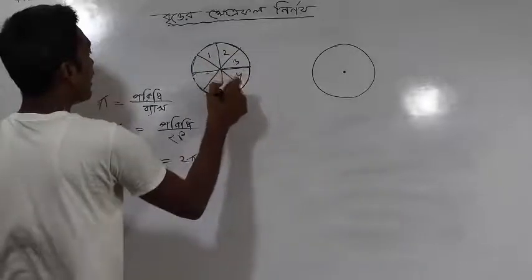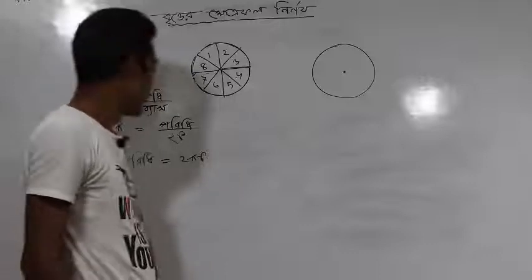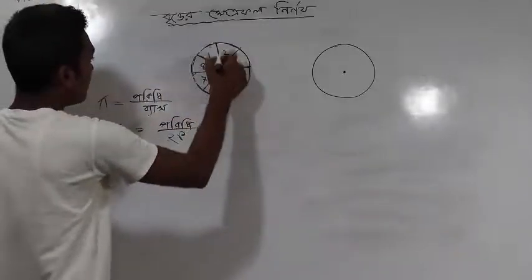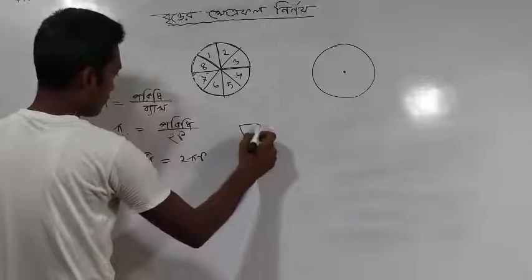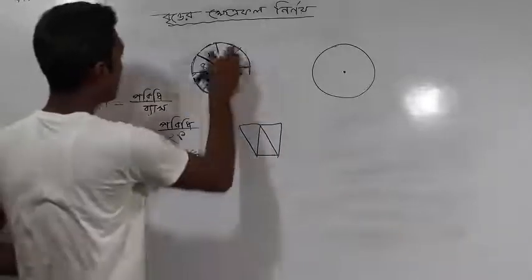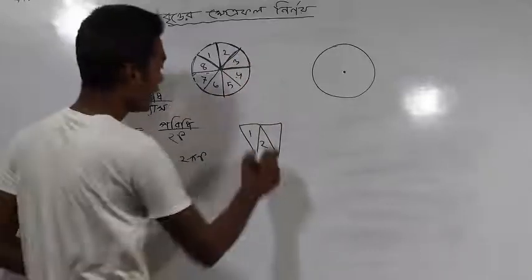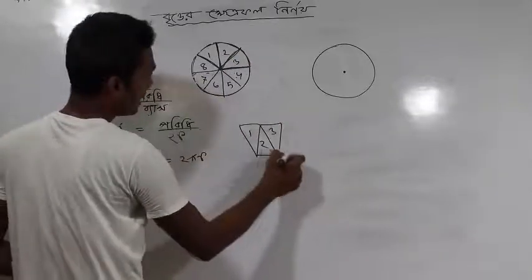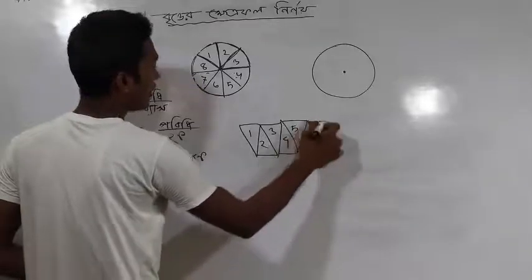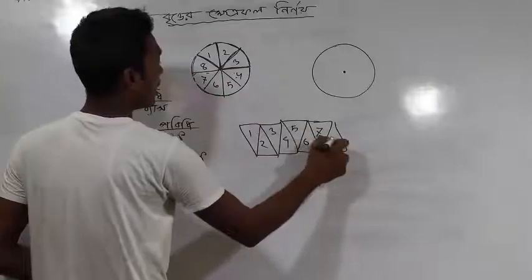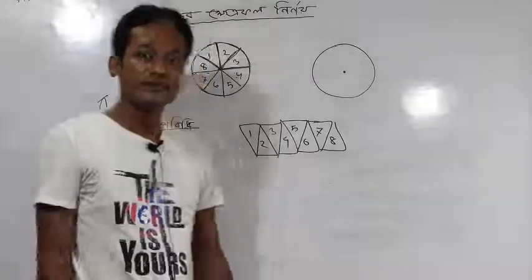ખણ્ડ 1, 2, 3, 4, 5, 6, 7, 8 — we divide into 8 equal parts. Each segment is numbered: 1st segment, 2nd segment, 3rd, 4th, 5th — up to the 8th. So we have divided into 8 equal sections.